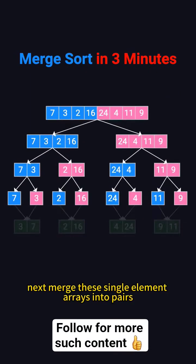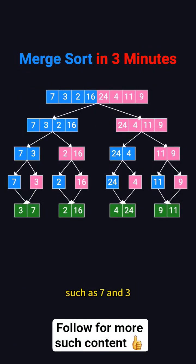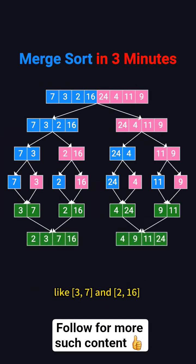Next, merge these single-element arrays into pairs, such as 7 and 3, forming 3, 7. Continue merging pairs into larger sorted arrays, like 3, 7 and 2, 16, to create 2, 3, 7, 16.